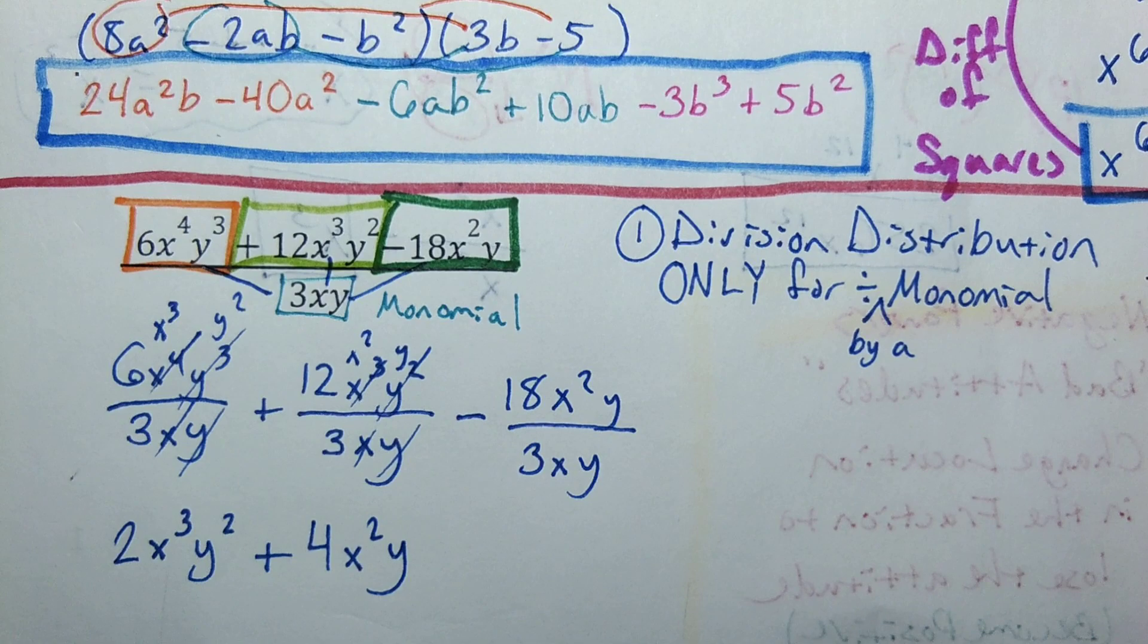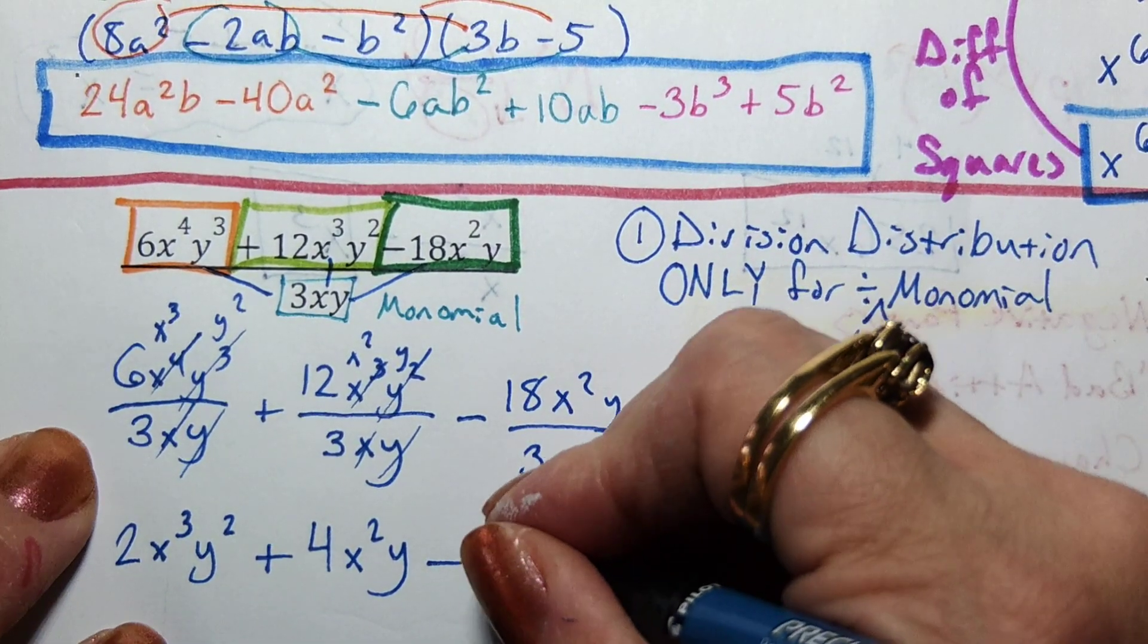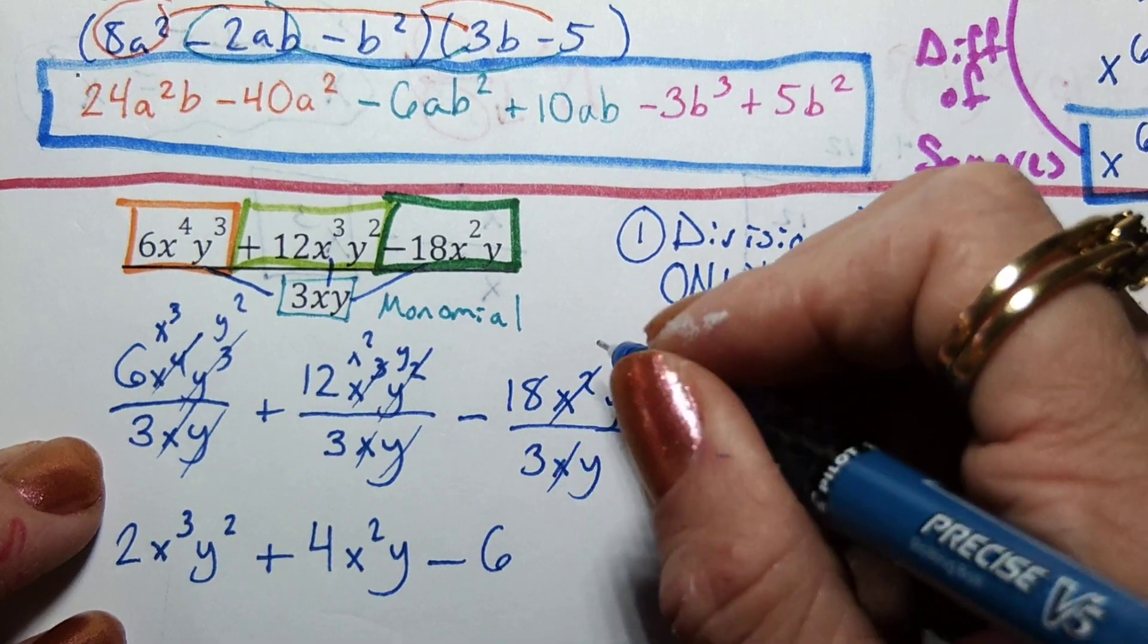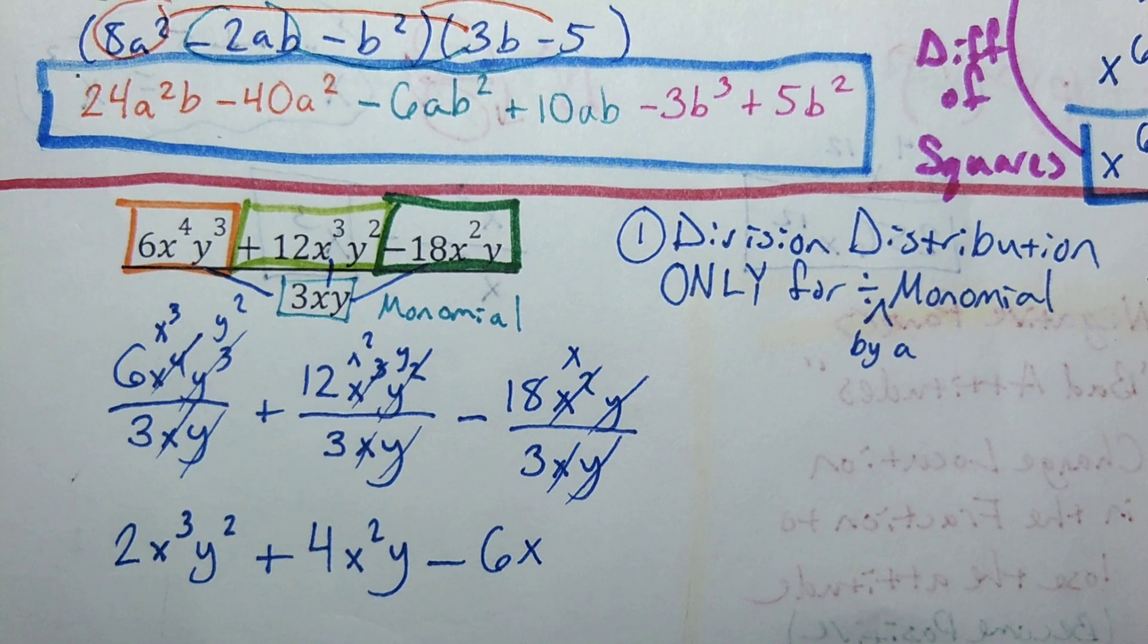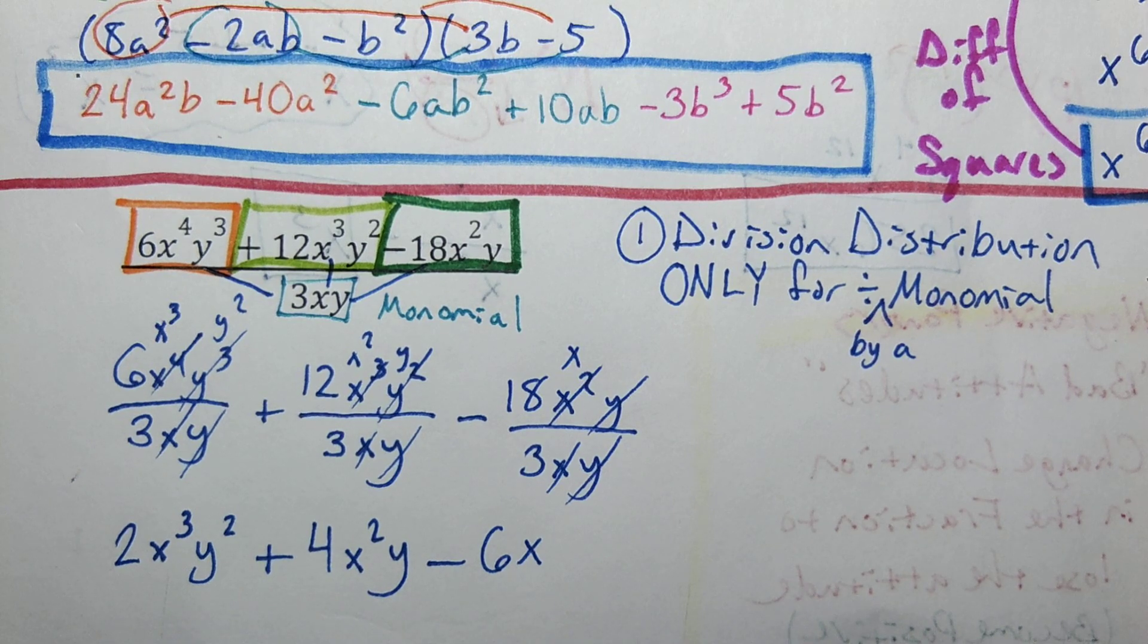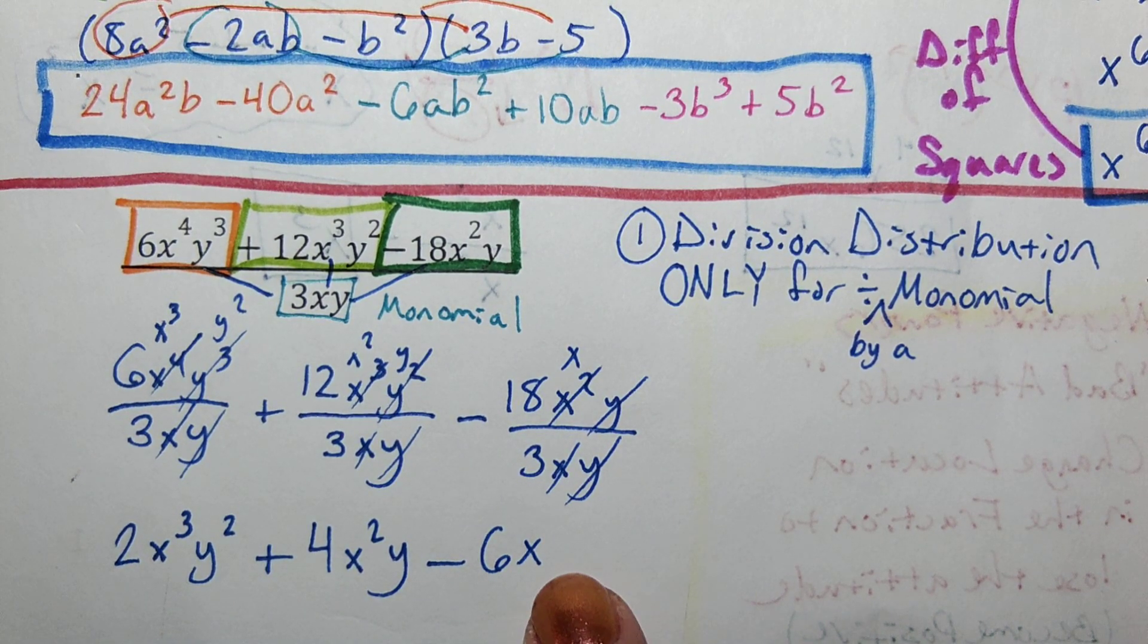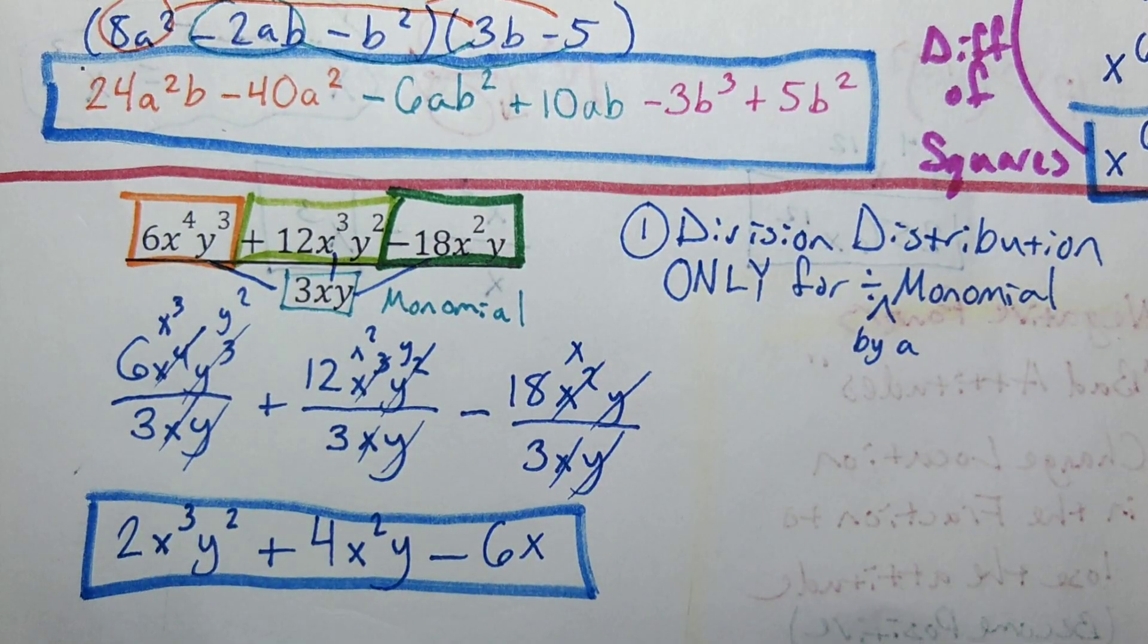So 2x^3y^2, 4x^2y, and then minus 18 over 3 is 6. Take an x out of both of these and we're just left with x. The y's cancel, so minus 6x. Hey, can I simplify that any further? No, they are not like terms at all. They've got the same variables - well this one doesn't have a y - but all different powers. So these are different and that's as far as we can go.